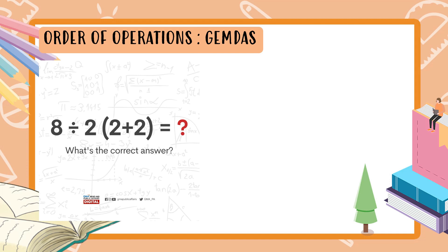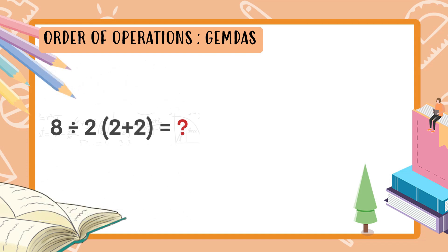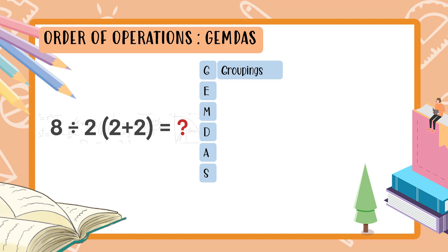GEMDAS is a mnemonic where each letter represents an operation we need to perform. G stands for Groupings — you have to solve everything inside groupings first. The groupings include the parentheses, the braces, and the brackets — solve those first.